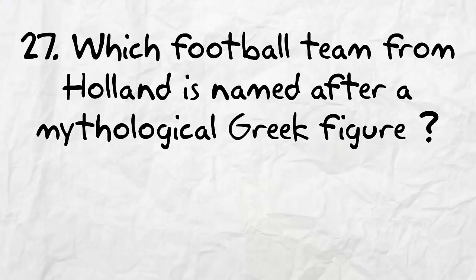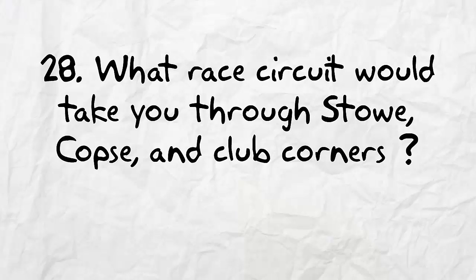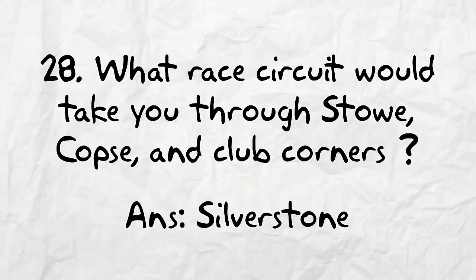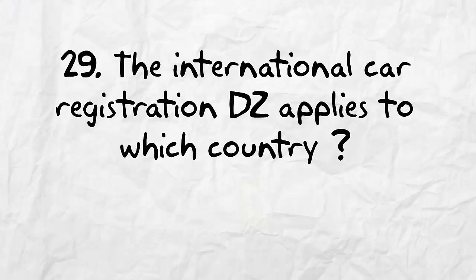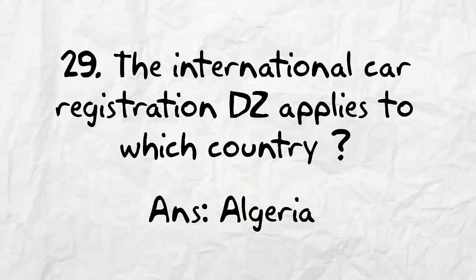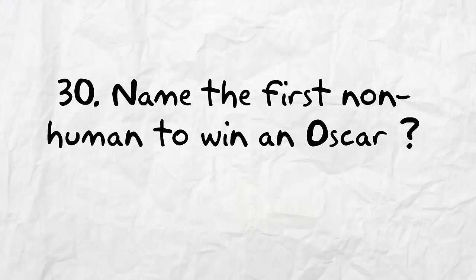Number twenty-seven: Ajax. Number twenty-eight: Silverstone. Number twenty-nine: Algeria. Number thirty: Mickey Mouse.